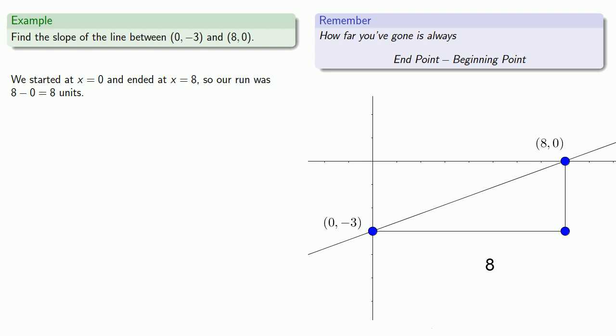How about our rise? Now we can move vertically to the point. To determine how far we've gone, we'll take a look at our vertical coordinates. We started at y equals -3 and ended at y equals 0. How far we've gone is end minus beginning, so our rise was 0 minus -3, or 3 units. Our slope will be the ratio of rise over run, so the slope will be 3 over 8.